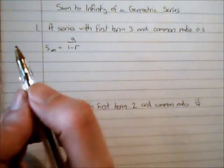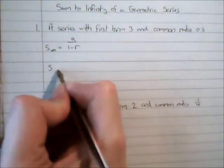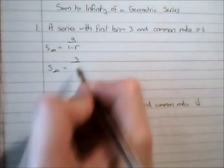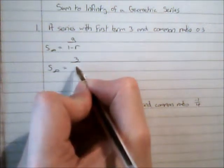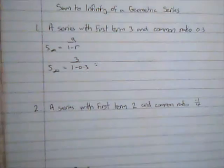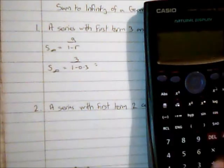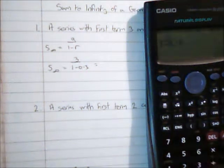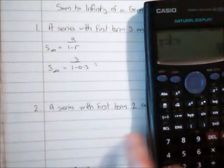Let's use it for this sequence. The sum to infinity for this first sequence: the first term is 3, the common ratio is 0.3, so 3 over 1 minus 0.3, and I can evaluate that and I get an answer of 30 over 7.